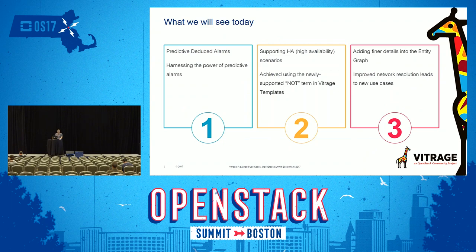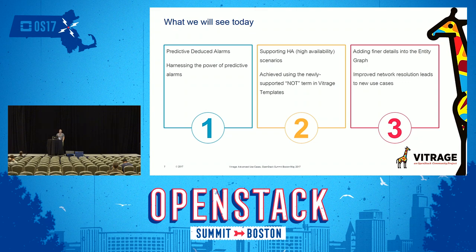We're going to see three use cases today. The first is predictive deduced alarms — for example, if a host is down, all instances are down. We want to talk about predicting alarms before they happen. The second is supporting high availability scenarios, where, for example, if we have two interfaces and one is down, the system will still be good. The third is adding finer details to the entity graph.